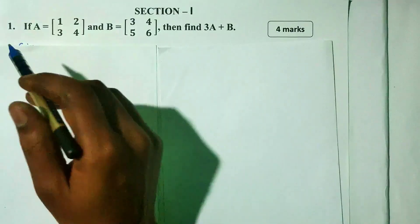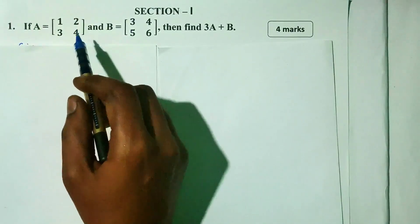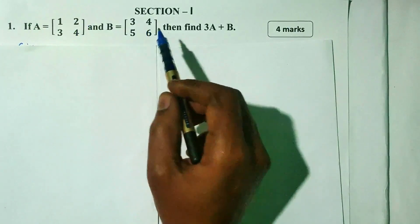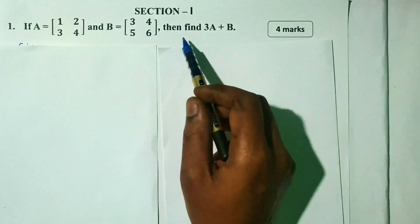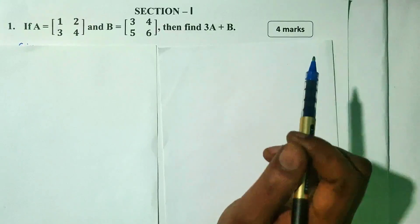Question 1: If a is equal to [1, 2, 3, 4] and b is equal to [3, 4, 5, 6], then 3a plus b is equal to — 4 marks.